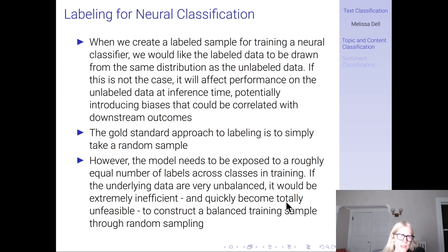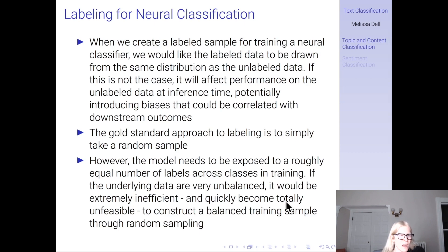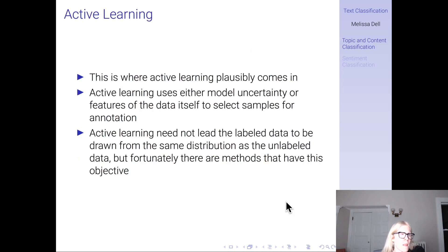The gold standard approach to labeling is to simply take a random sample. However, the model needs to be exposed to a roughly equal number of labels across classes during training. If the underlying data are very unbalanced, it would be extremely inefficient and quickly become totally unfeasible to construct a balanced training sample through random sampling. There might be one in a thousand positives for what you're looking for, or even less.